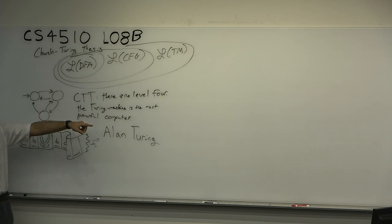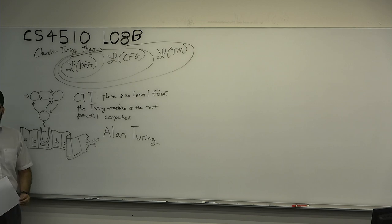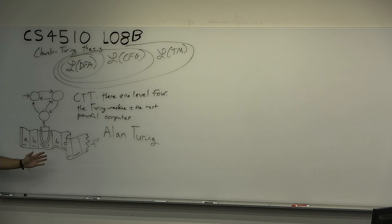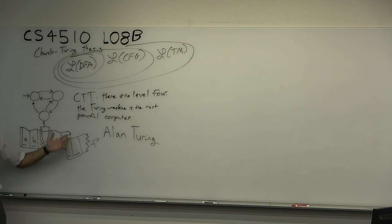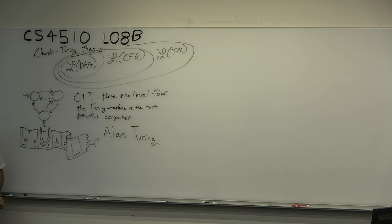He was only legally forgiven — pardoned — for being gay in like 2013, so it took decades for him to be recognized. Even though computer scientists were in awe from the beginning. Then they made a terrible movie about him — The Imitation Game. They made a passionate romantic movie about his fake straight relationship, even though the guy was super gay.